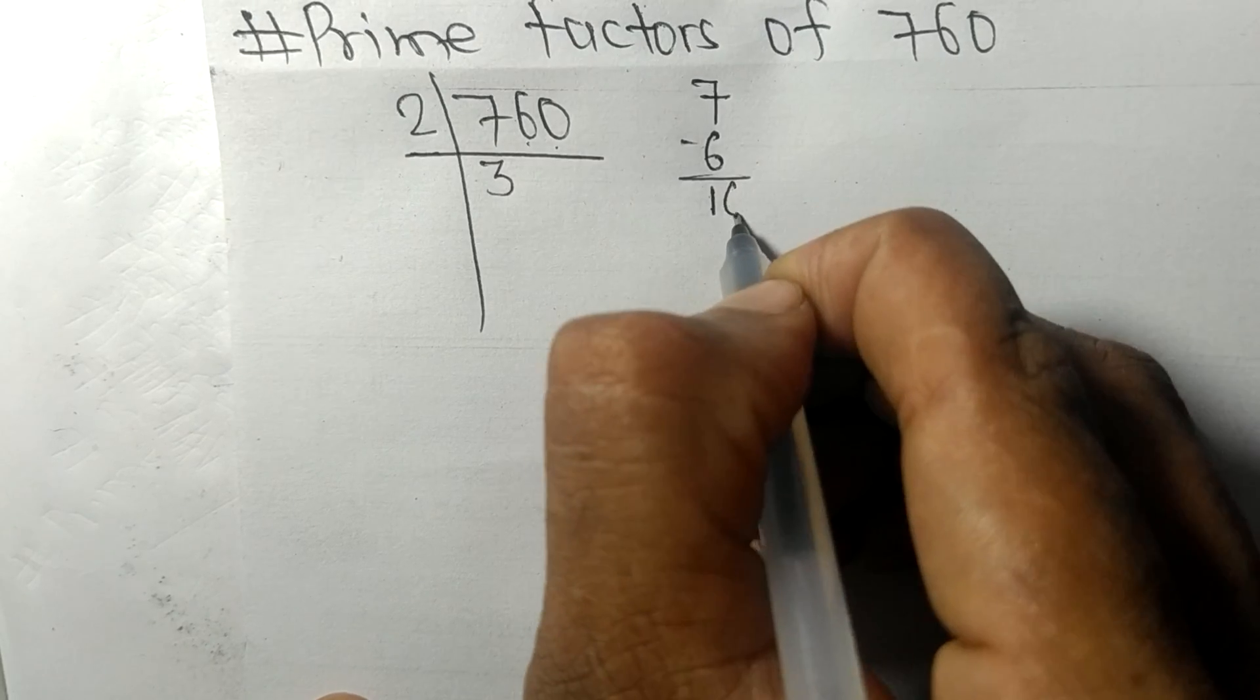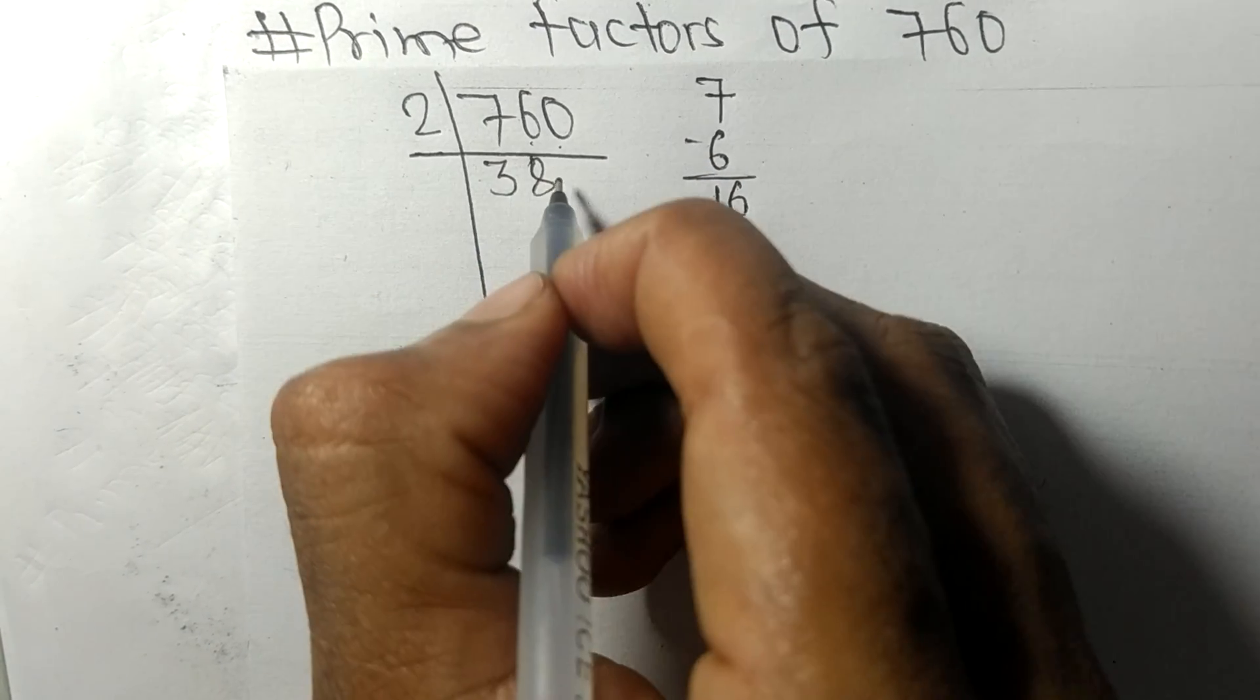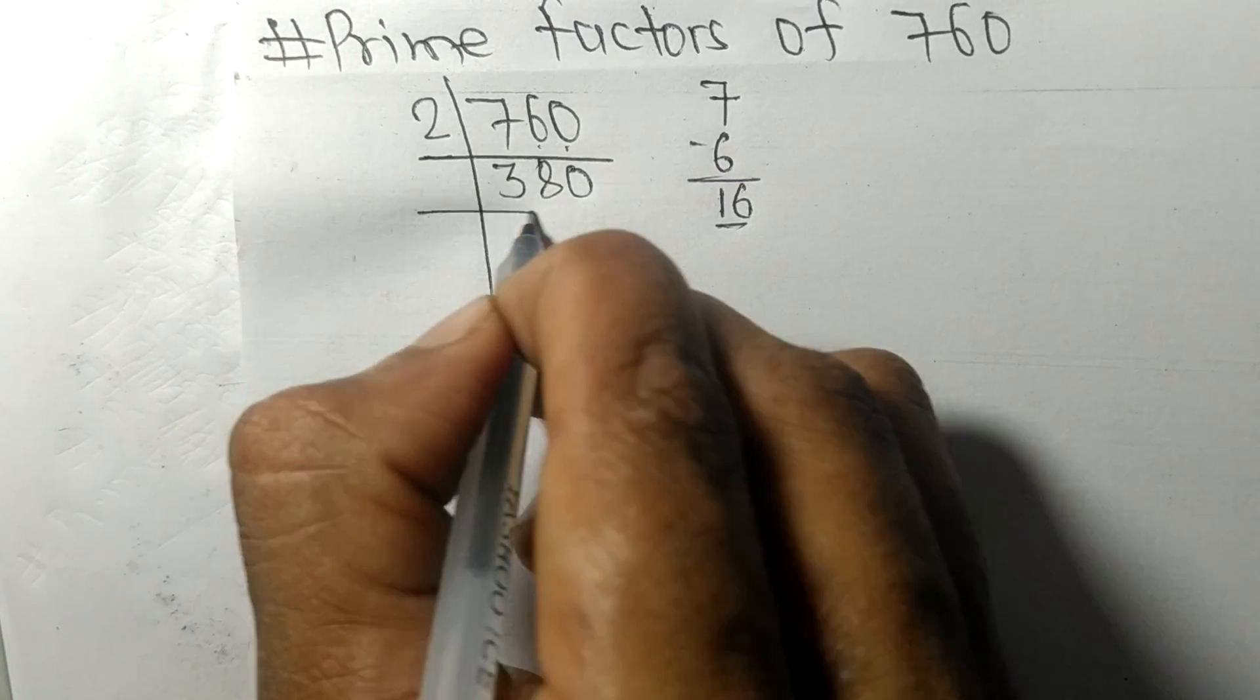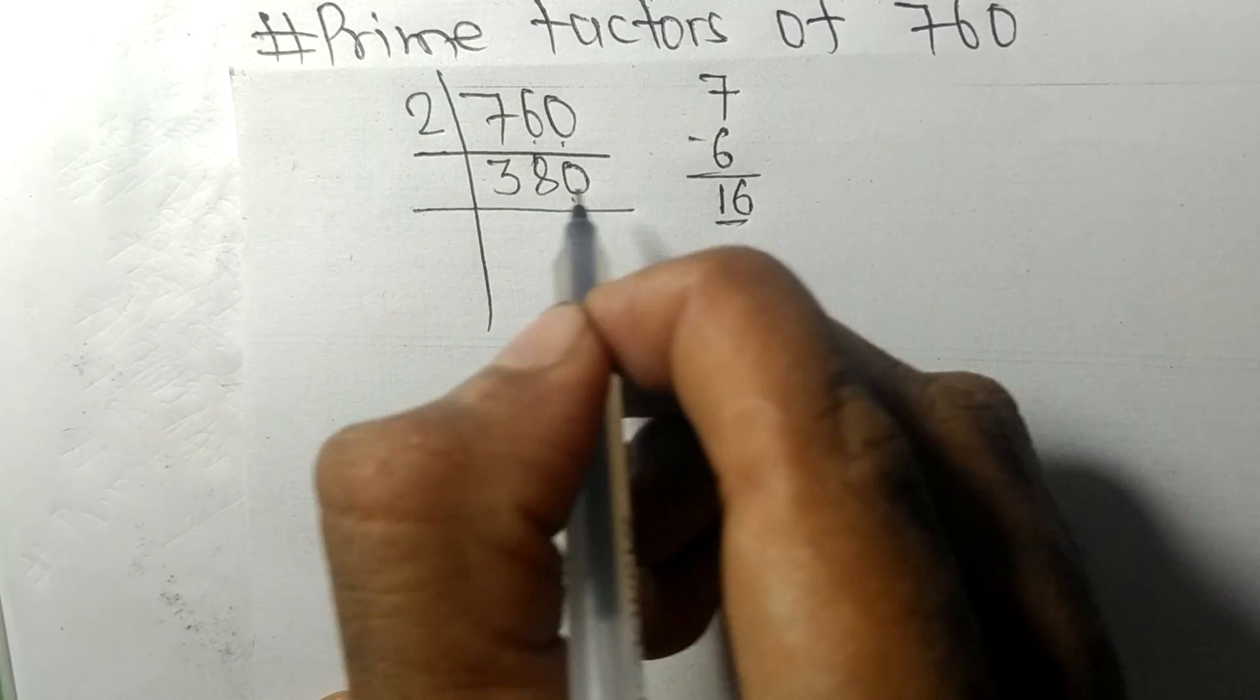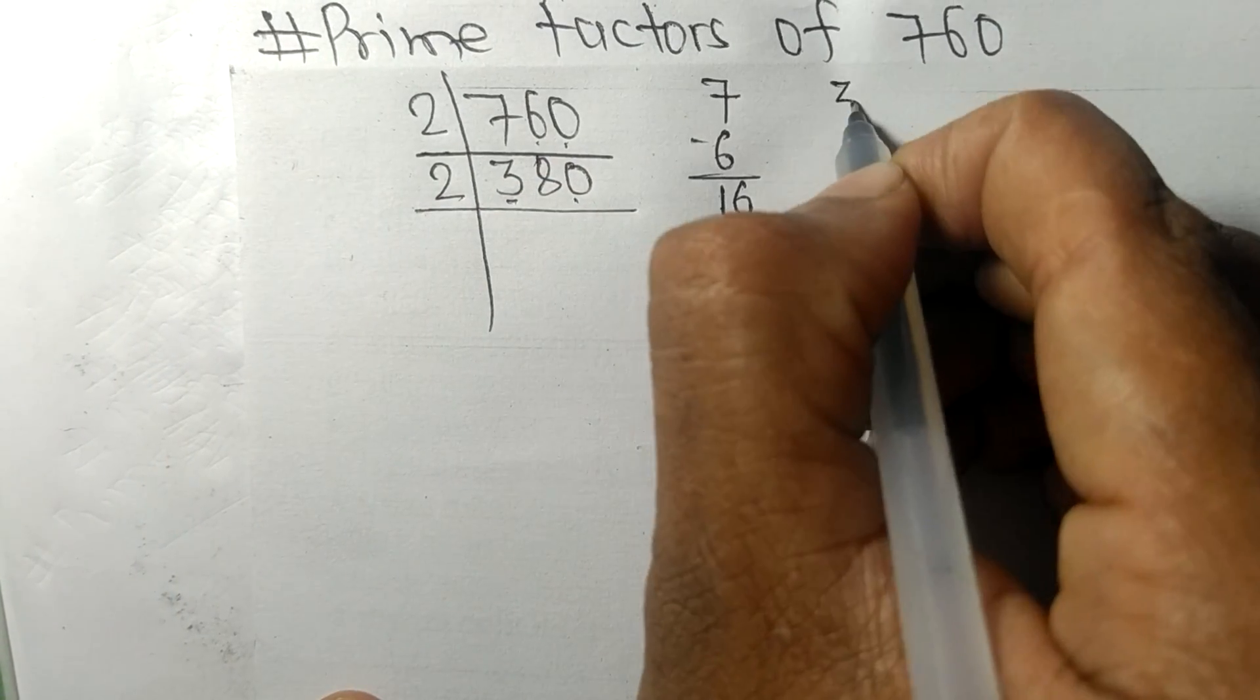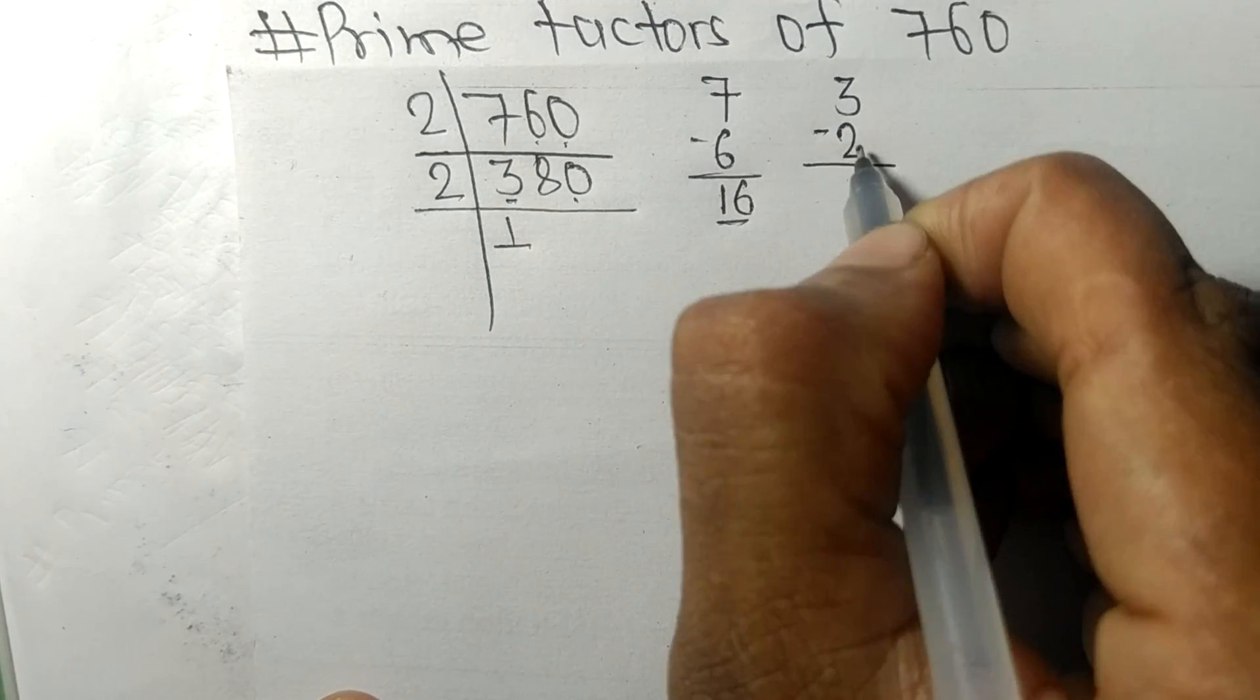And this 6, 16. 2 times 8 means 16, and 2 times 0 means 0. Again it has 0 at the last, so it is divisible by 2. First we have 3, so 2 times 1 means 2, remainder 1.